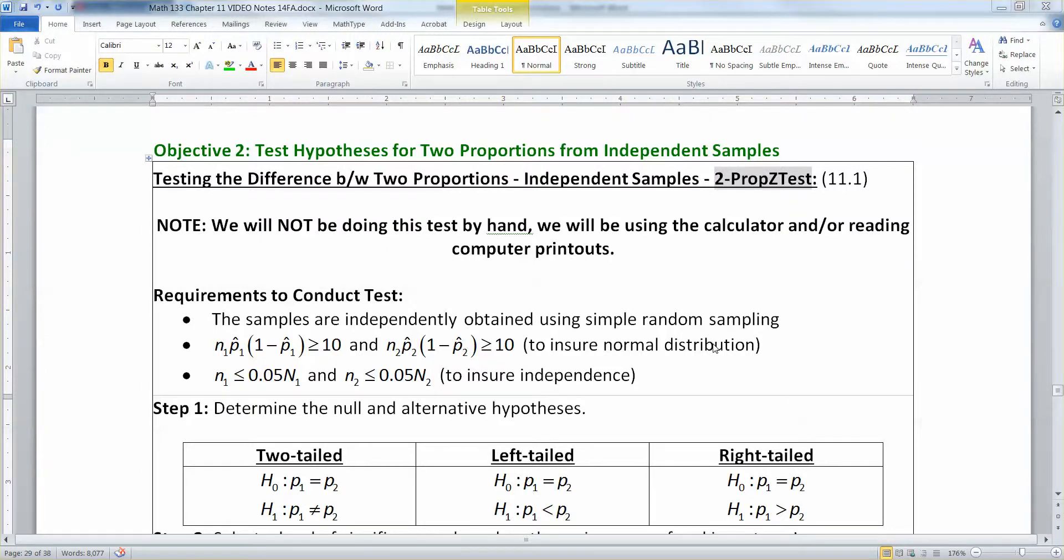Now we want to be able to run the hypothesis test for the difference between two proportions. This is our last hypothesis test for this chapter. This is going to be called a 2-prop z-test when we get to the calculator.